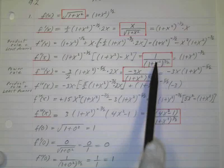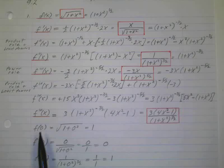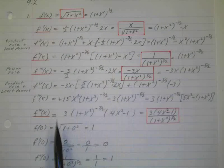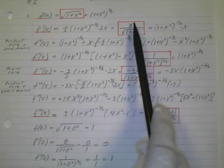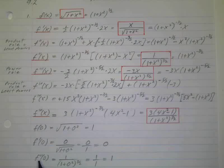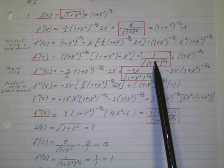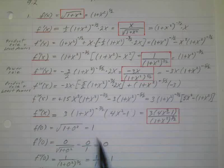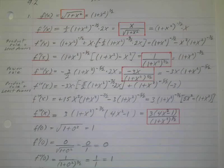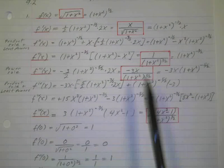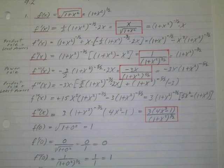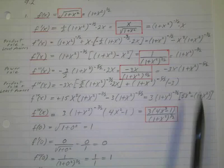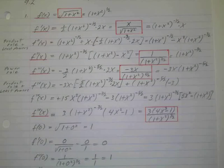Those are the derivatives: f, f prime, f double prime, triple prime, and fourth. Now I evaluate each at zero. f of zero: plugging in zero gives one. f prime of zero: zero over one, which is zero. f double prime at zero: gives one. Triple prime at zero: zero over one, which is zero. Fourth derivative at zero: negative three over one, so negative three. It looks like an awful lot of work just to get ones and zeros — that's kind of sad — but those are the five numbers needed for Taylor's formula: 1, 0, 1, 0, -3.